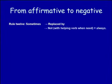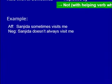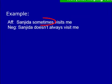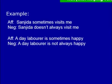Rule number twelve: 'sometimes' is replaced by 'always,' and the verb is made negative using 'not.' Where there is no auxiliary verb, make the verb negative by using a helping verb. For example: 'Sanjida sometimes visits me' becomes 'Sanjida does not always visit me.' There is no auxiliary verb, so we take the help of 'does.' Another example: 'A day laborer is sometimes happy' becomes 'A day laborer is not always happy' — because 'is' is an auxiliary verb, we just add 'not.'